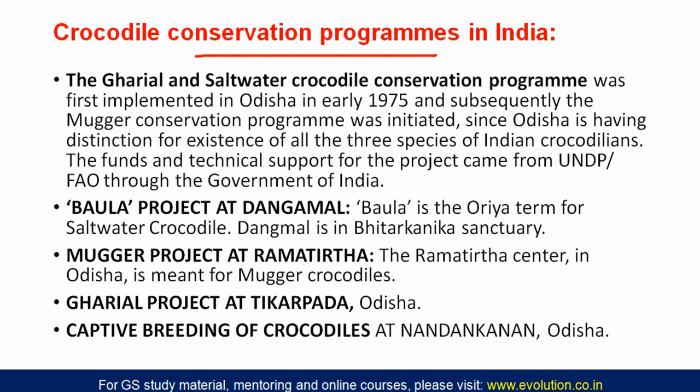India has a conservation program for gharial and saltwater crocodile. It was first implemented in Odisha in 1975 because Odisha has both the gharial and the saltwater crocodile. Subsequently, the mugger conservation program was also initiated. Odisha has the distinction of having all three species of Indian crocodiles. Funds and technical support came from UNDP and FAO along with the Government of India.